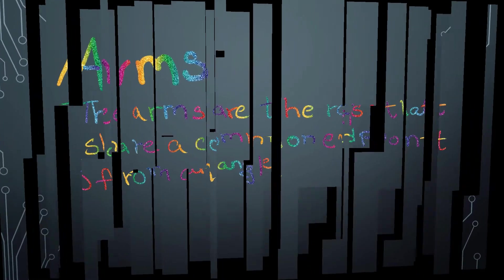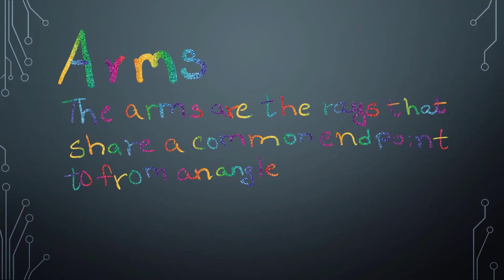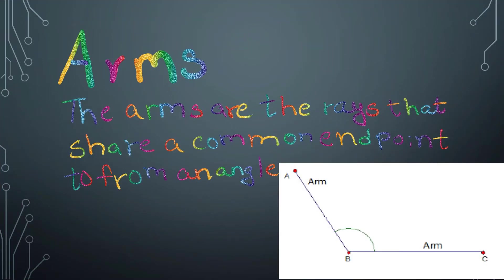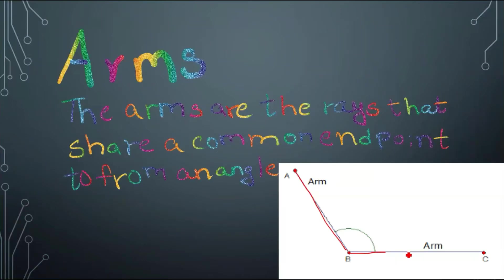Arms. The arms are the rays that share a common endpoint to form an angle. This is an arm and this is the second arm. The first arm is arm AB or ray AB, and the second arm is arm BC or ray BC.